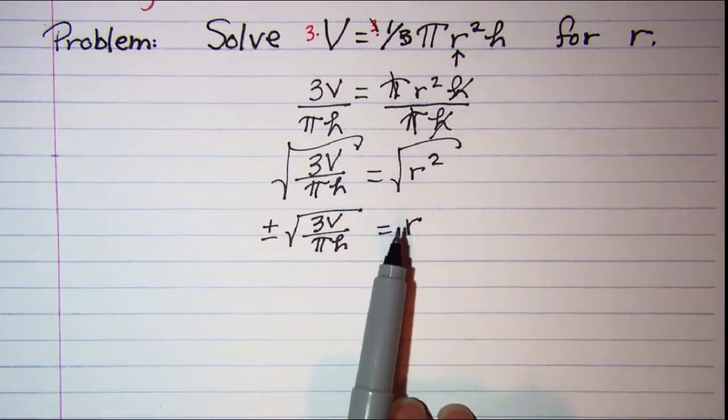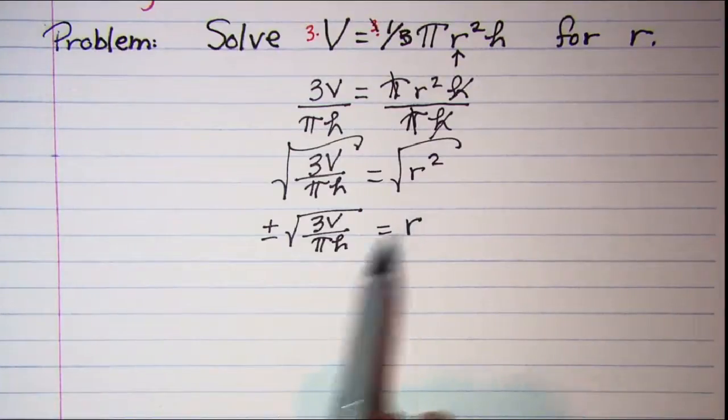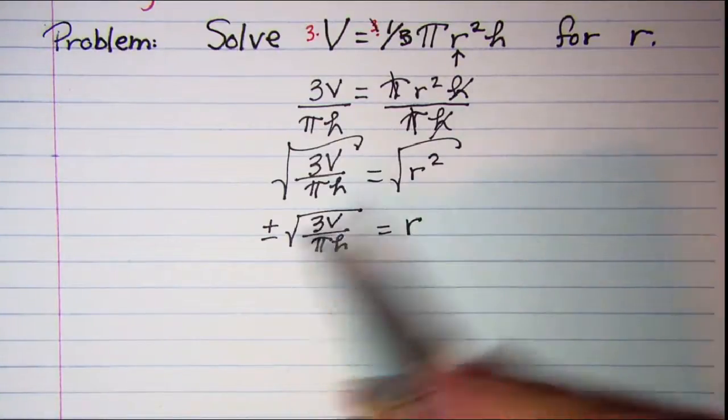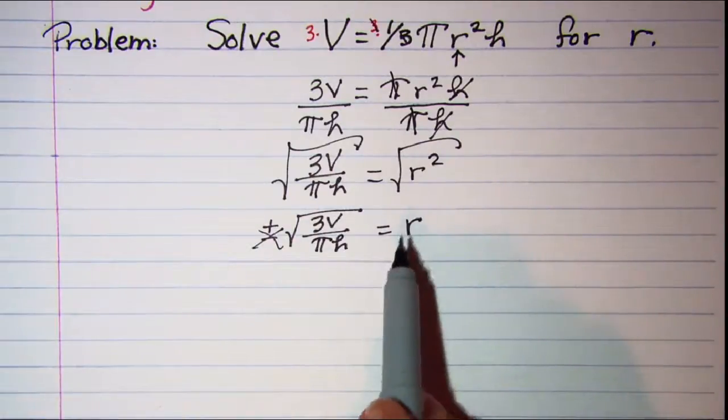When you have an application with a real life value in it you can't have a radius which is negative, so the negative is actually not useful in this problem.